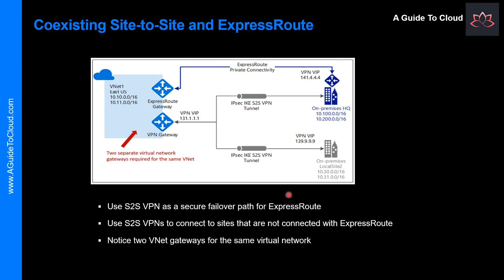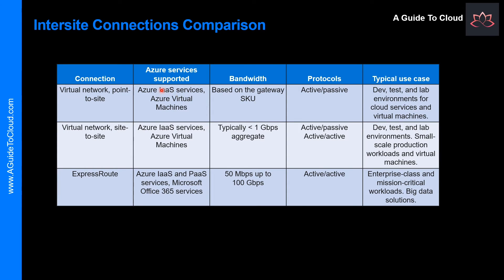You can create a connection between your on-premises network and Microsoft Cloud in three different ways: co-located at a cloud exchange, point-to-site internet connection, and any-to-any connection. There are many inter-site connection choices, and a comparison table summarizes how to make a selection.